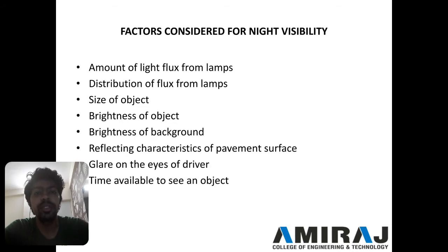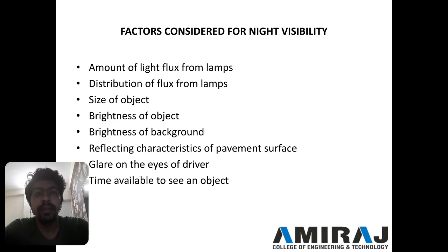The factors we need to consider for night visibility are: first, the amount of light flux from the lamp; second, distribution of flux — whether that flux provided from the lamp is uniform or not uniform, which will decide whether night visibility is good or bad. Third is the size of the object. Suppose the object on the carriageway is either a car, a bike, or a cycle — that type of size matters for night visibility.